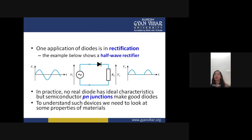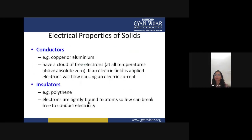In practice, no real diode has ideal characteristics, but semiconductor PN junctions make good diodes. To understand such devices we need to look at some properties of materials. There are three types of solids: conductors, semiconductors, and insulators.